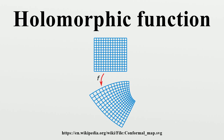Definition: Given a complex-valued function f of a single complex variable, the derivative of f at a point Z0 in its domain is defined by the limit. This is the same as the definition of the derivative for real functions, except that all of the quantities are complex. In particular, the limit is taken as the complex number Z approaches Z0, and must have the same value for any sequence of complex values for Z that approach Z0 on the complex plane.